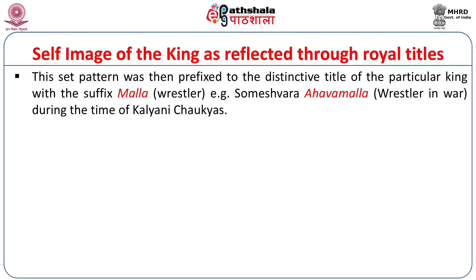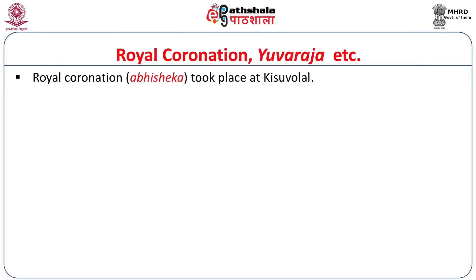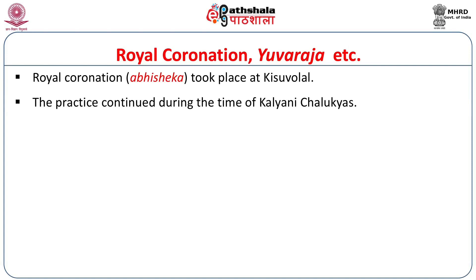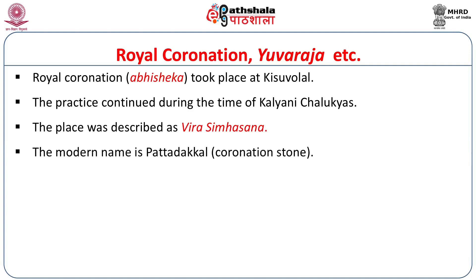In the Kalyani Chalukya period, there was also a distinctive title for each king with the suffix Malla, meaning Wrestler. For instance, the Kalyani Chalukya king Someshwara had the title Ahava Malla, meaning Wrestler in War. This was the nature of how the king projected himself to both the ruled and his associates. Royal coronation was important and was generally held at a place known as Kisuvolal, described as Veera Simhasana. The modern name is Pattadakal, meaning coronation stone.